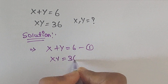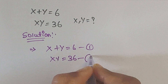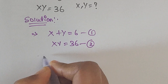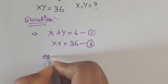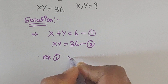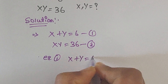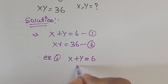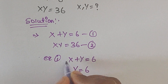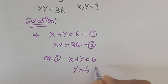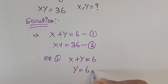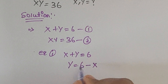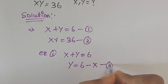Let us consider this is equation 1 and this is equation 2. From equation 1, x plus y equals 6, so we can write y equals 6 minus x, moving x to the right side. Let us consider this is equation 3.